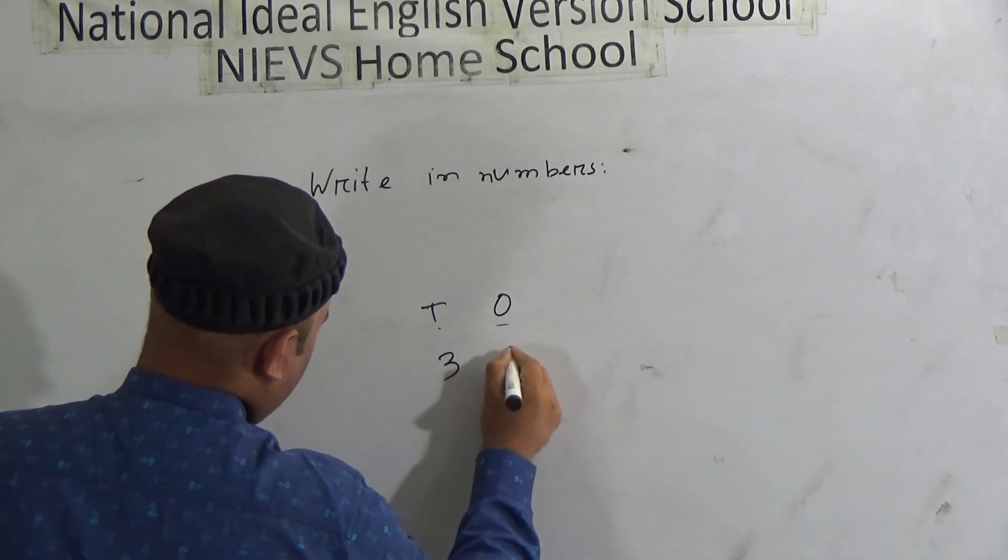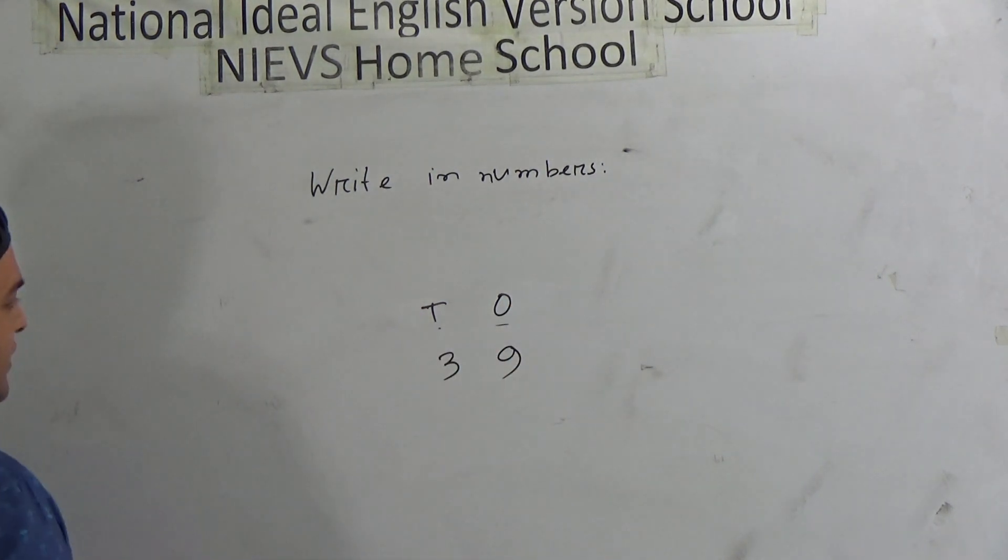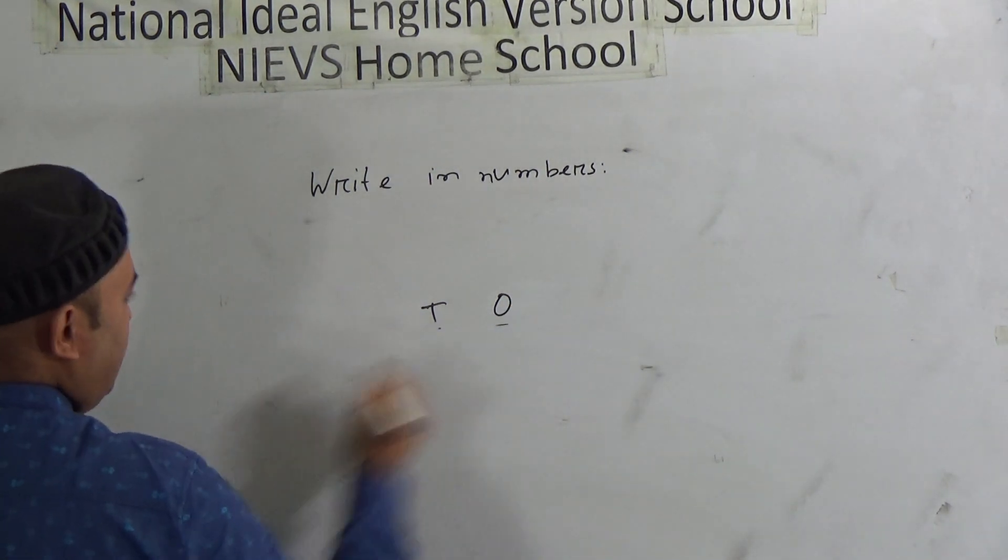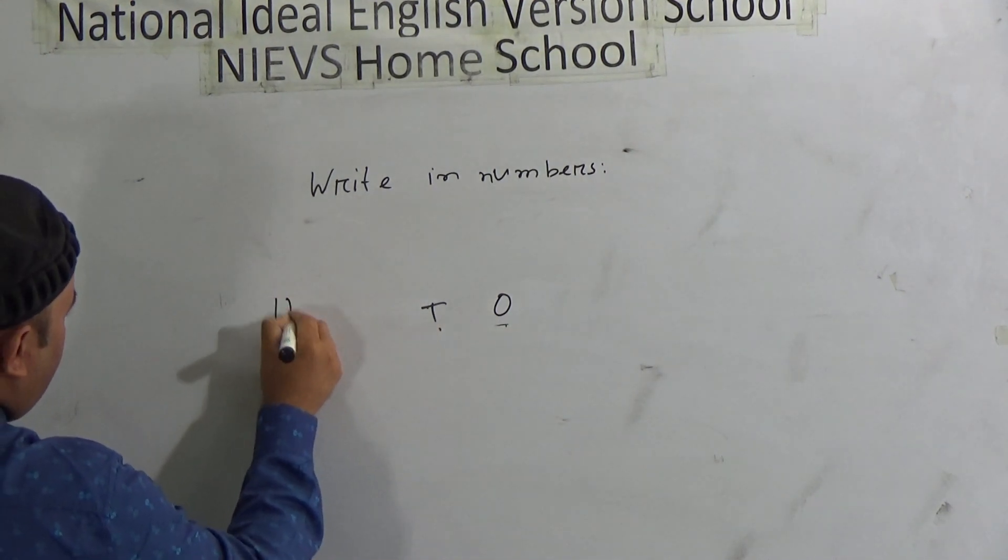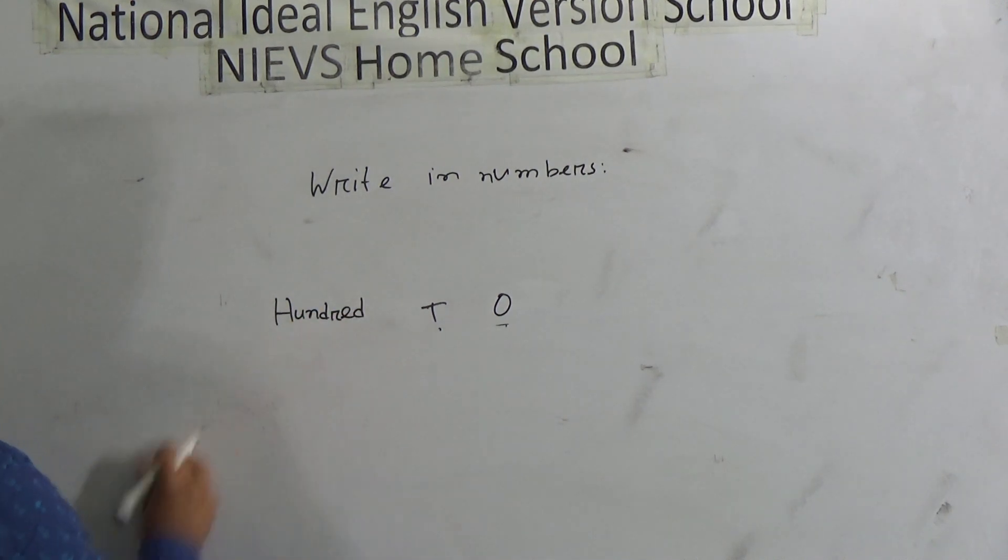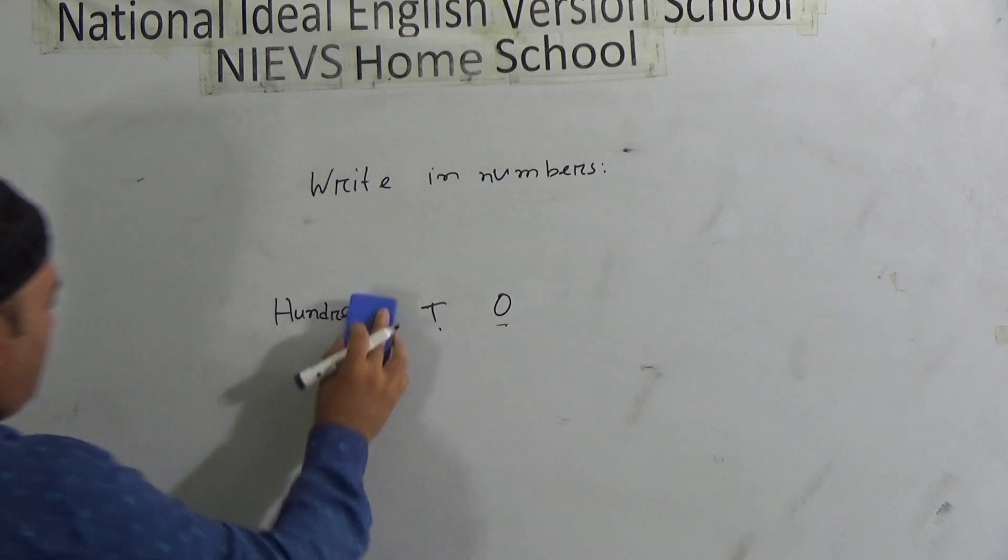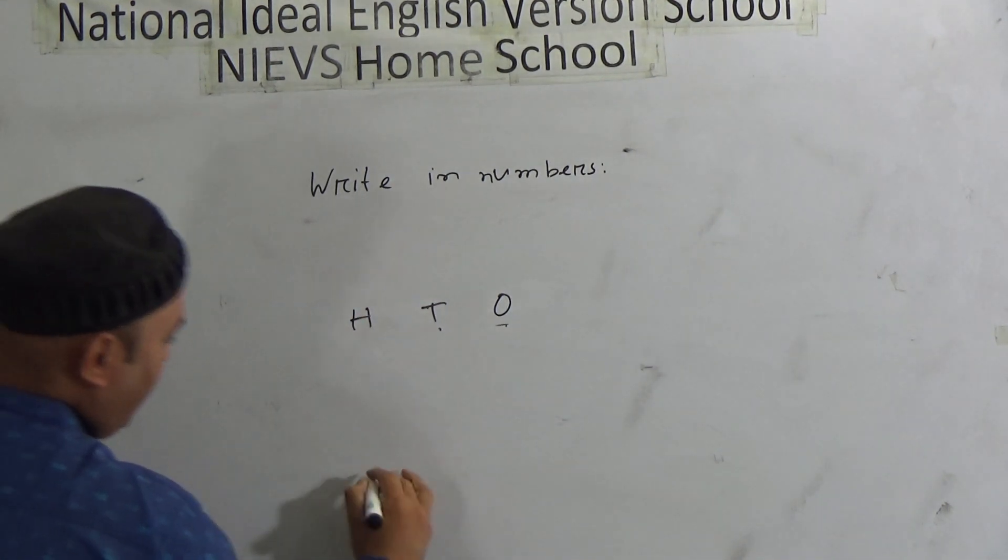Now, ones, tens, and what is the next one? Next one will be hundred. Next one will be hundred place. So in short, hundred is called H.